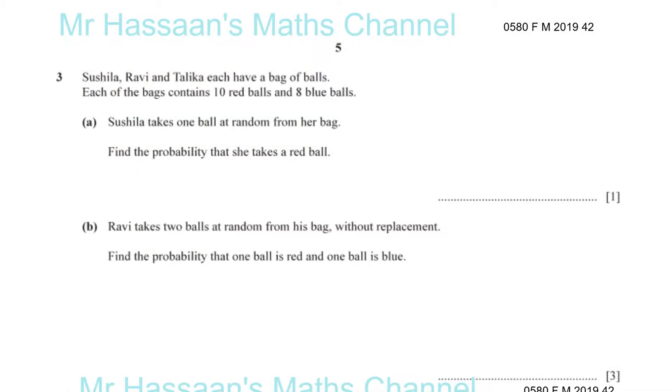Now for question number 3 from February-March 2019, paper 4, variant 2. Here we have a question where we are asked to deal with a probability. Shushila, Ravi and Talika each have a bag of balls. Each of the bags contains 10 red balls and 8 blue balls.